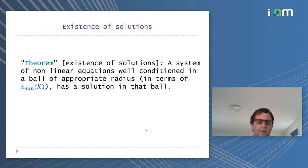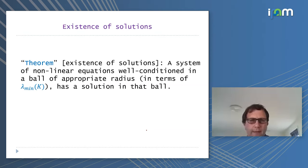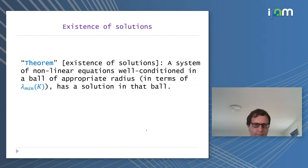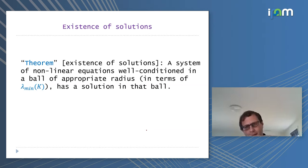This immediately gives a theorem — essentially a reformulation of Polyak's theorem. A system of non-linear equations which is well-conditioned in a ball of appropriate radius has a solution in that ball. Well-conditioned means that the minimum eigenvalue of K (lambda_min) needs to be separated from zero in that ball. The appropriate radius depends on the minimum value of lambda_min.